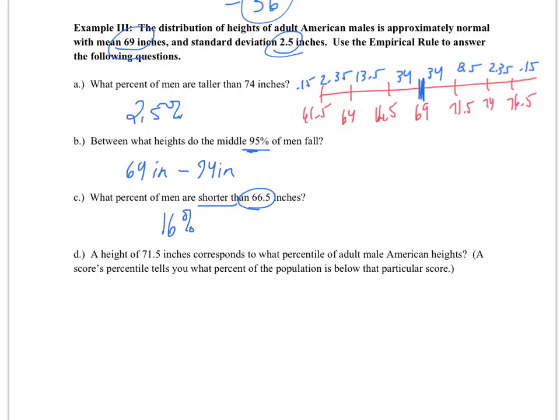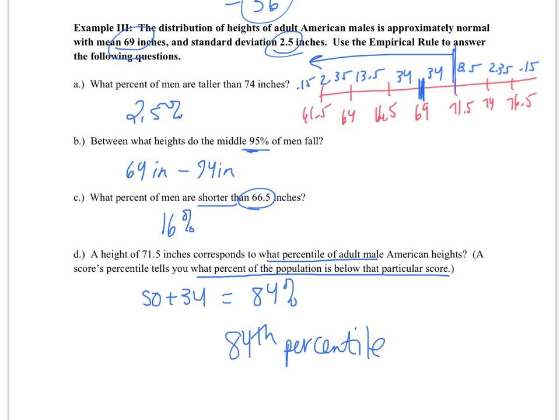Now this last question says, a height of 71.5 inches corresponds to what percentile of adult males? So a percentile tells you what percent of the population is below that particular score. So for example, if I scored a 90% on a normalized assessment, then that means that I scored equal to or better than 90% of my peers. So in this case, if we look at the height of 71.5, we want to look at how many percentages are below that point. And I have 50 plus 34, which gives me 84%, which tells me that he is in the 84th percentile for height.